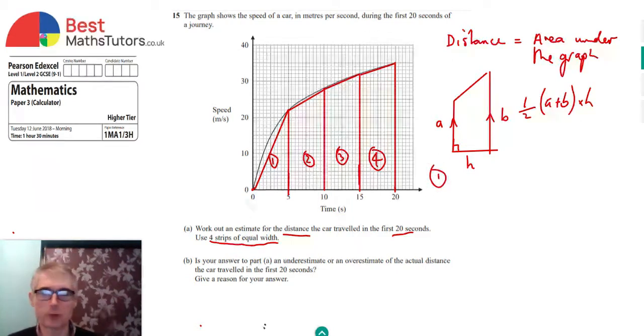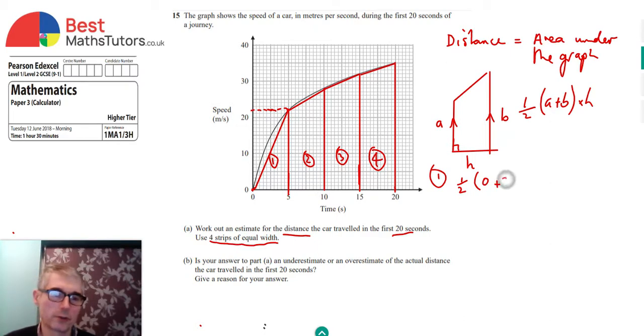So we're going to look at each one individually. Area one is half of, and our A there is zero, because there's no length actually on that side. So zero plus this value here, which if we project across, is actually 22. So zero plus 22. And then the value of H for this one is actually 5, because that's that distance there. And it's going to be the same distance for each one of these strips. So that's going to be times 5. If we work that out, that's going to be half times 22 is 11 times 5 is going to give us 55.